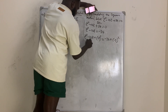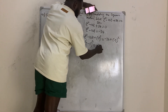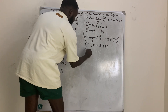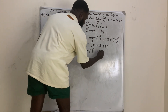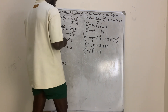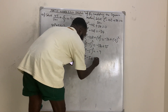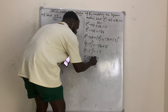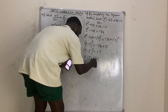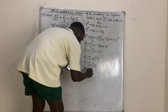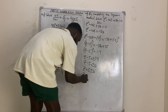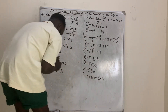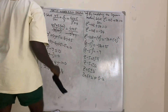Factoring the left side: (z minus 5) squared equals negative 9. Taking the square root: z minus 5 equals plus or minus the square root of negative 9, which is plus or minus 3i. Therefore z equals 5 plus or minus 3i, giving the solutions z equals 5 plus 3i or z equals 5 minus 3i.